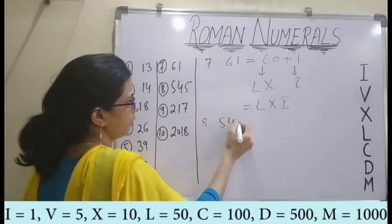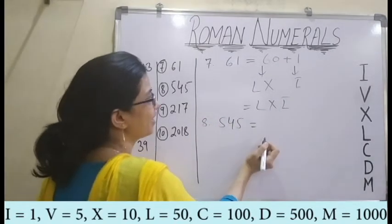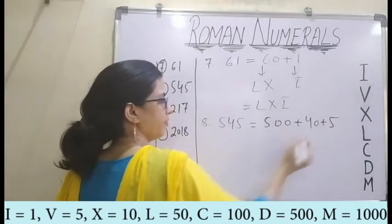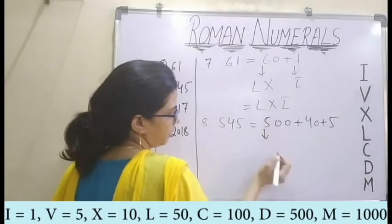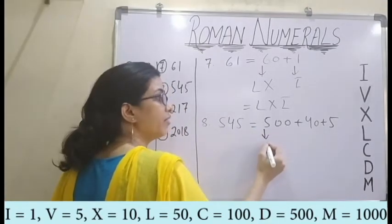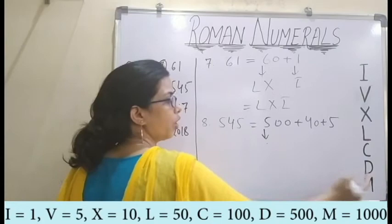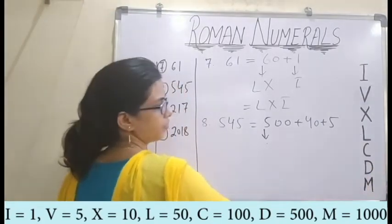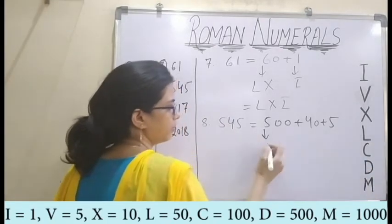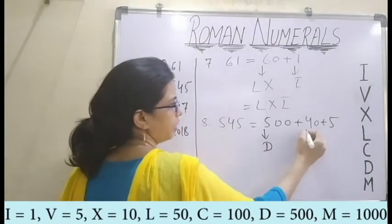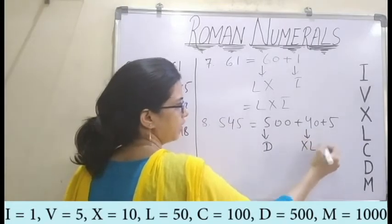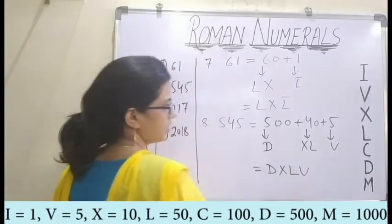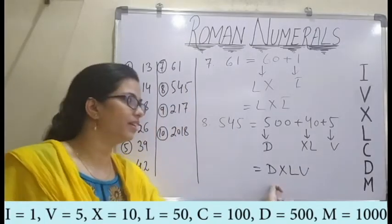Similarly, for the tenth one, which is 545: we write the expanded form as 500 plus 40 plus 5. For 500 we have D. For 40 we write XL. And for 5 we write V. So my answer is DXLV for 545.